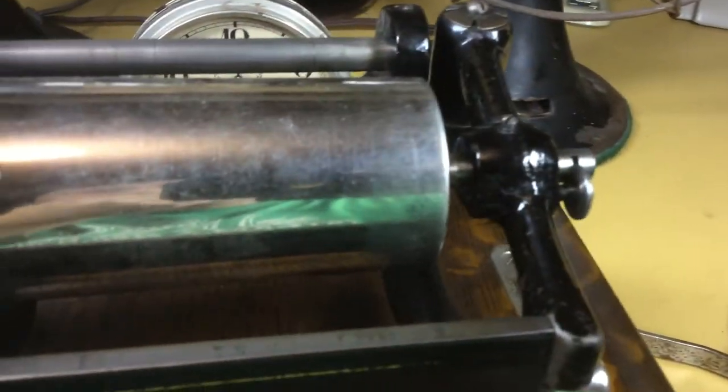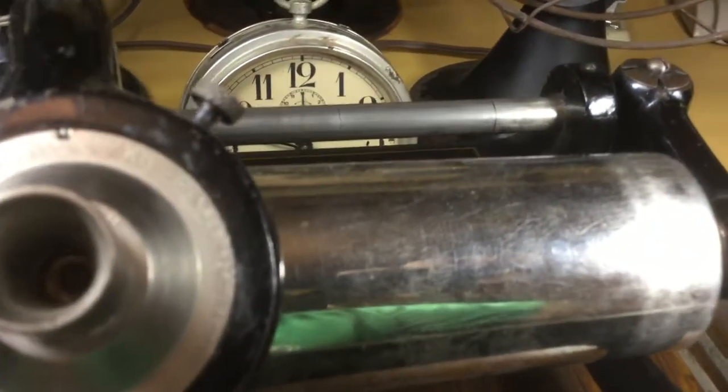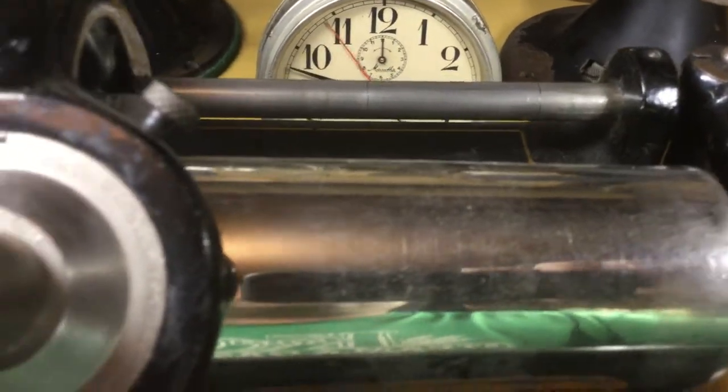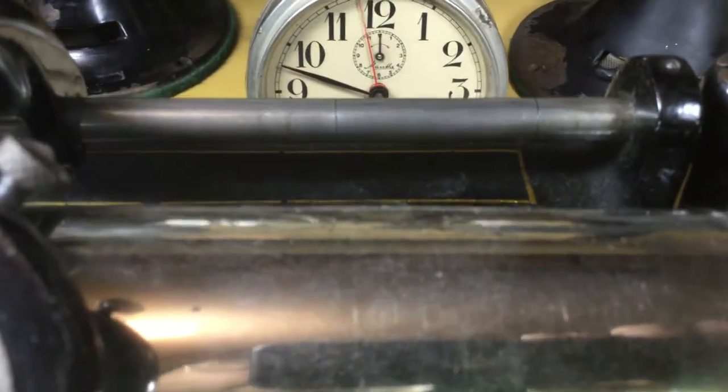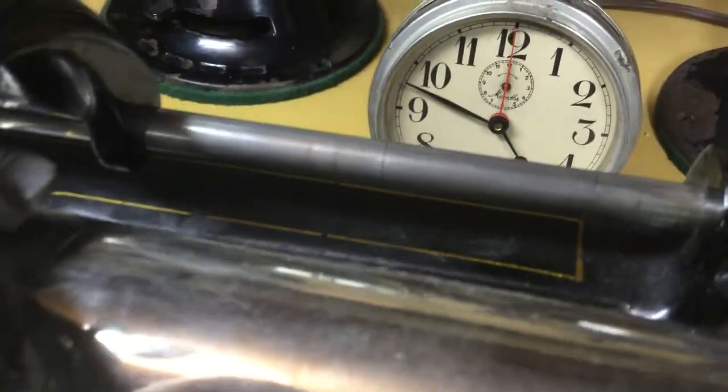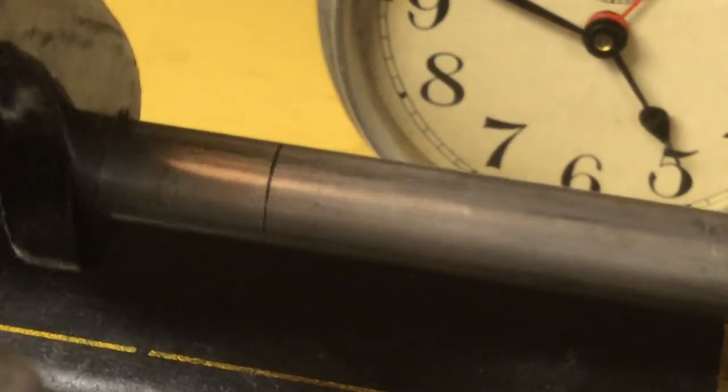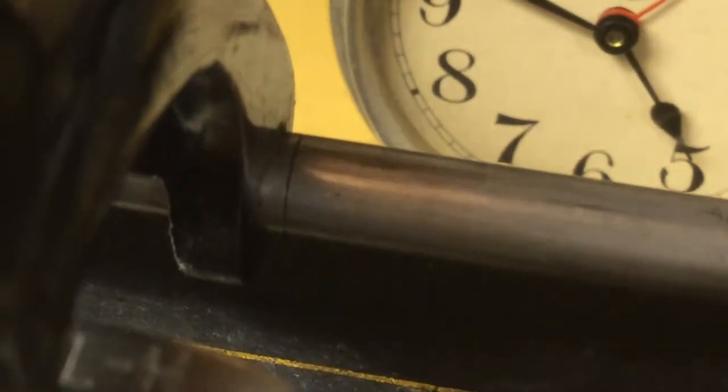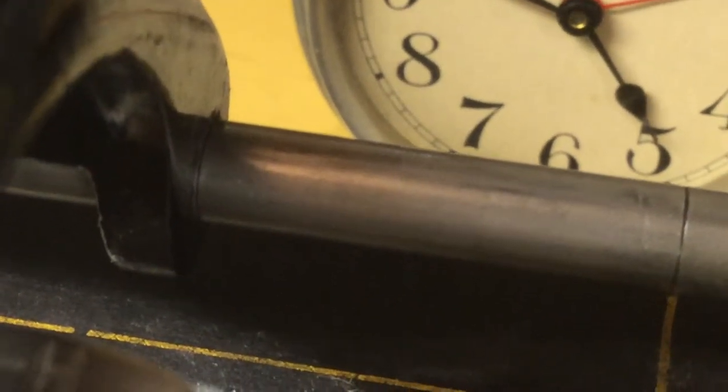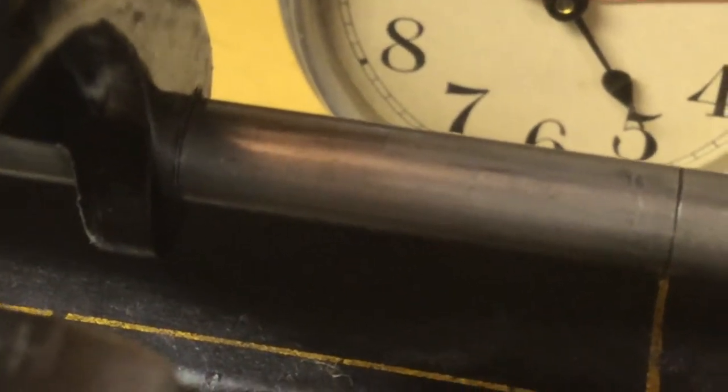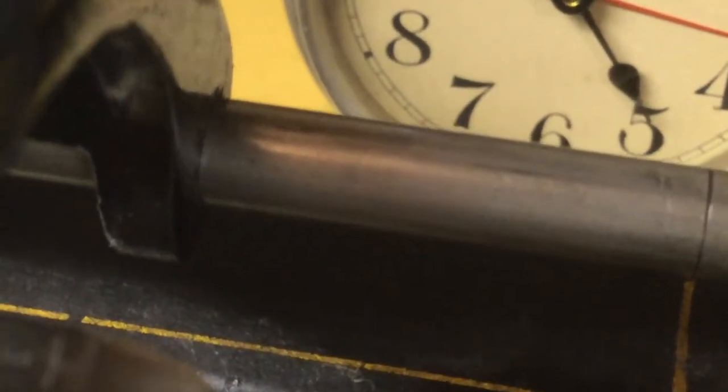What we'll do here is zoom in, we'll run the carriage over to the first mark here, get right on the mark, and then reinsert the winding crank.